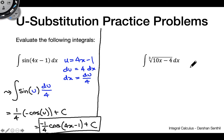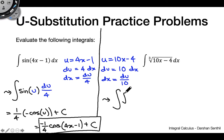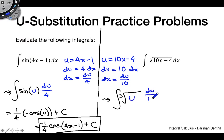Next example: we have the cube root of 10x minus 4. I hope you got u equals 10x minus 4. Taking du gives us 10 dx, so dx equals du over 10. Plugging back into the integral gives us the integral of the cube root of u times du over 10. Remember, cube root is the same as u to the one-third, so this is just an inverse power rule problem.